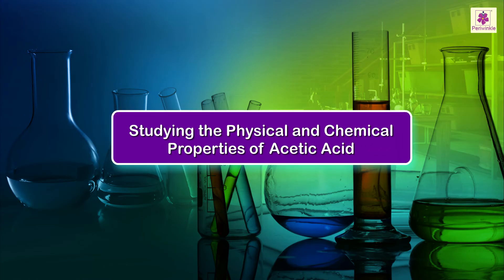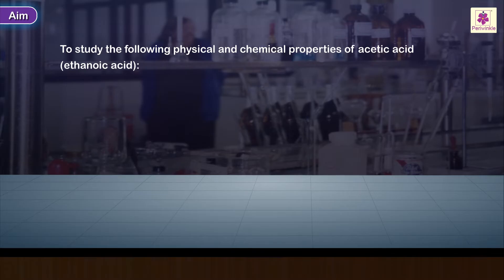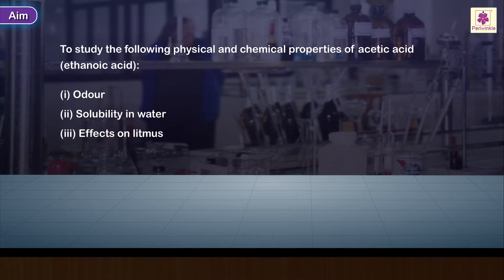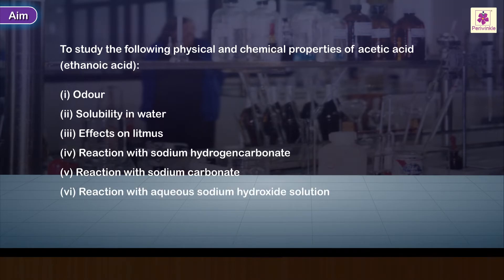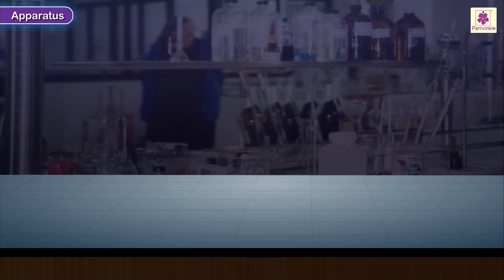Studying the physical and chemical properties of acetic acid. Aim: to study the following physical and chemical properties of acetic acid (ethanoic acid): one, odor; two, solubility in water; three, effects on litmus; four, reaction with sodium hydrogen carbonate; five, reaction with sodium carbonate; six, reaction with aqueous sodium hydroxide solution.